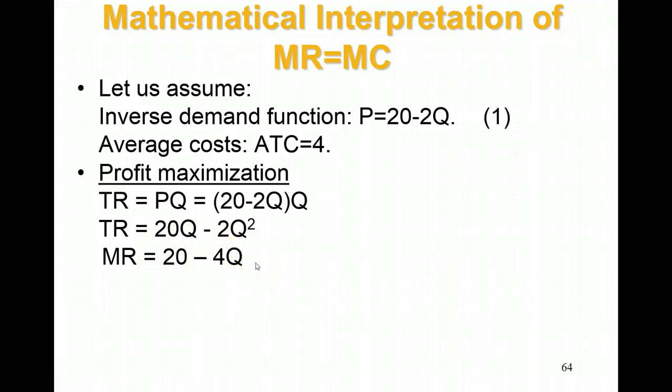Let's do the same thing for total cost. Total cost is average total cost times Q. Since average total cost is constant at 4, total cost equals 4Q. Taking the derivative gives me marginal cost of 4.